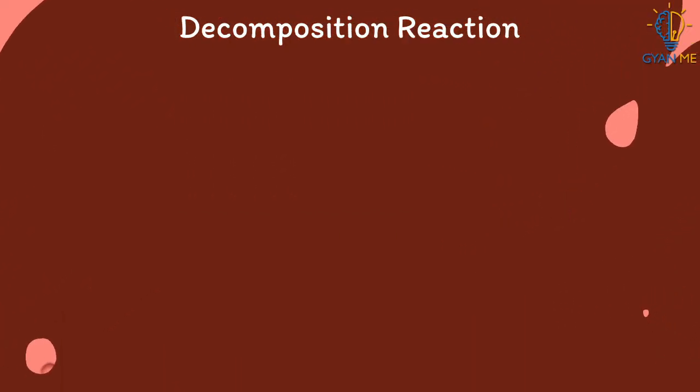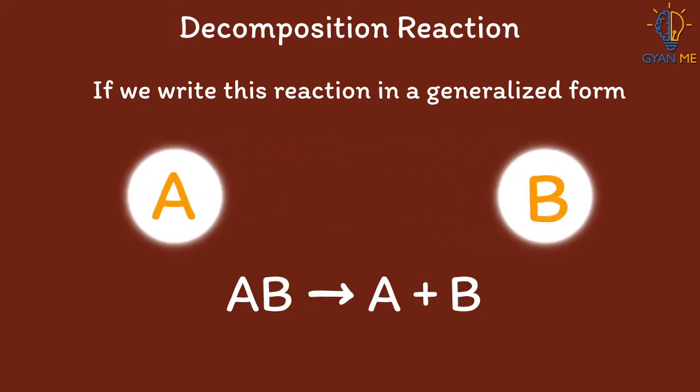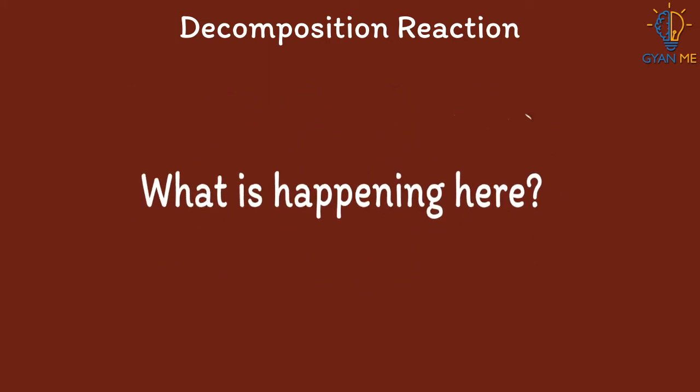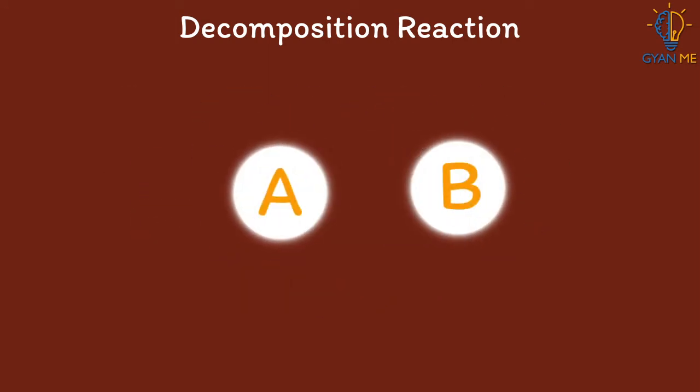Now if we write this reaction in a generalized form, it will look like this: AB gives A plus B. What is happening here? Here a compound AB is splitting into simpler substances, i.e., A and B.